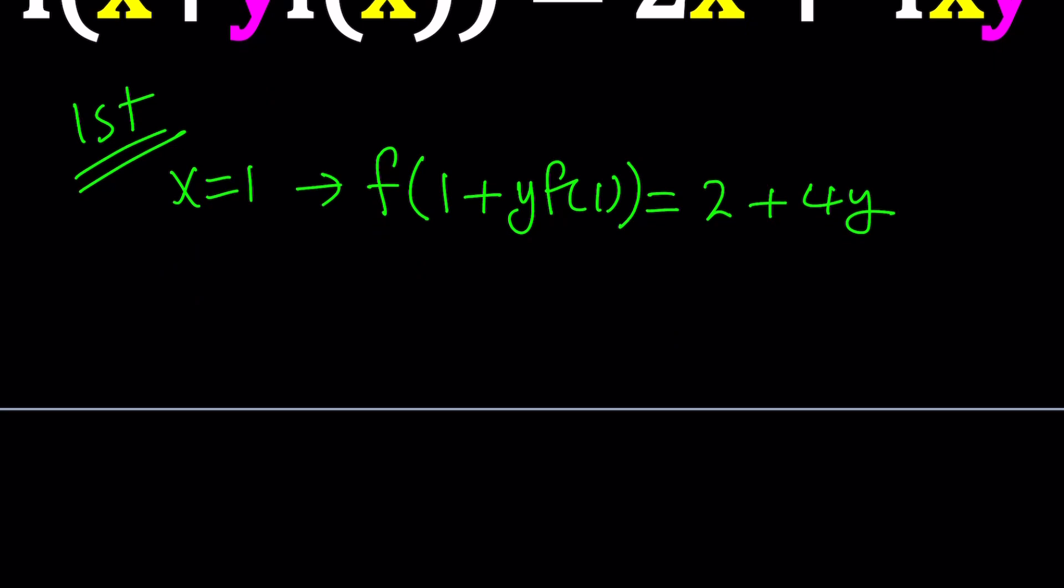This is nice, because we got y inside the parentheses, and f(1) is a constant. So, let's go ahead and replace f(1) with c. It doesn't matter what it is at this point, but we know c is a constant.